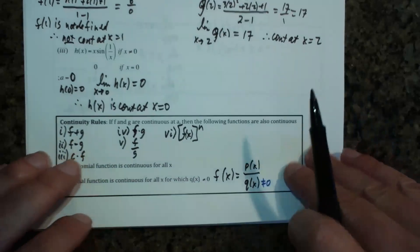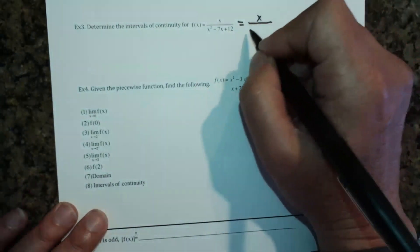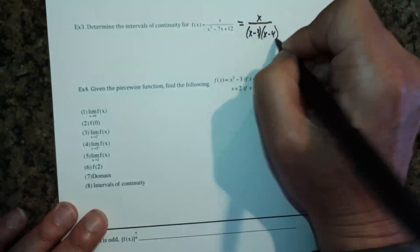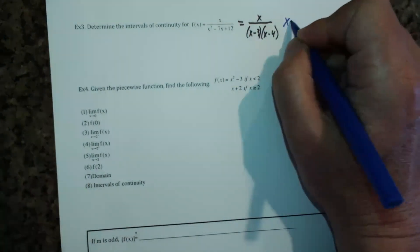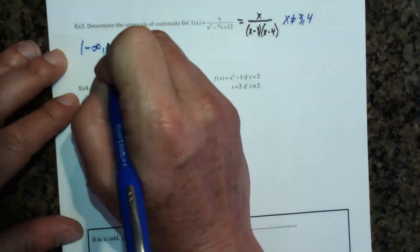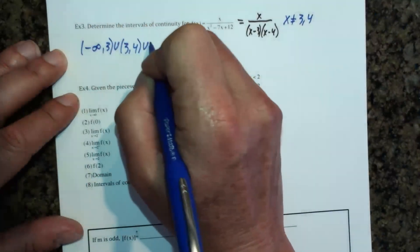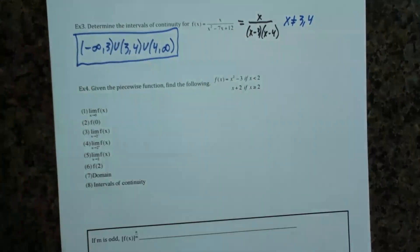Sample three: determine the intervals of continuity for F(x) = x / (x² − 7x + 12). Factoring the denominator, we can see that x cannot be three or four. So in interval notation, the function is continuous on negative infinity to negative three, then three to four, then four to infinity — everything except x equals three and x equals four.